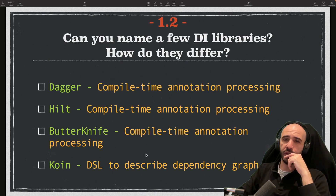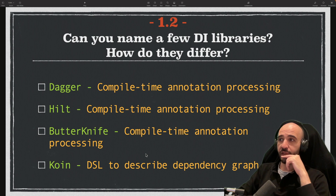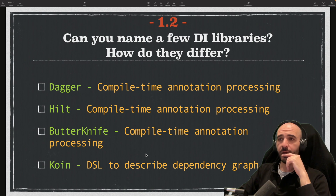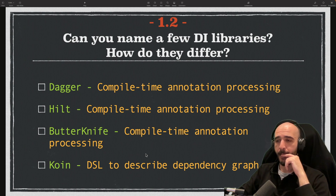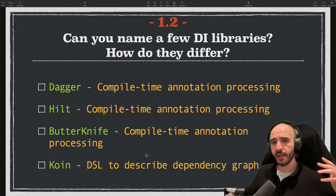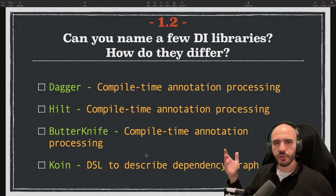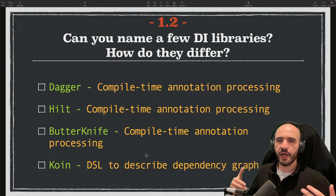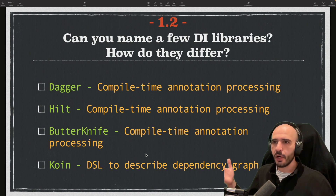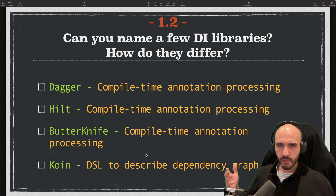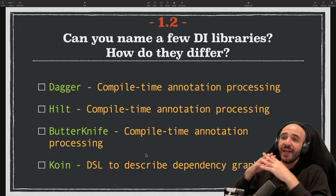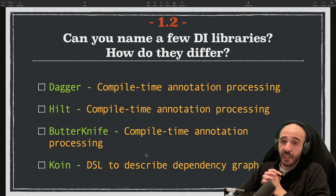Follow-up question to the first one: can you name a few dependency injection libraries for Android and how do they differ? So first of all there's Dagger, Hilt, Butter Knife, Koin — the list goes on. These are the ones I've used throughout the years.